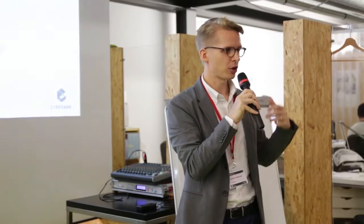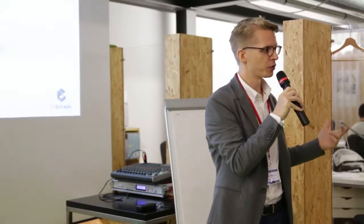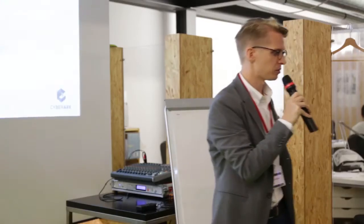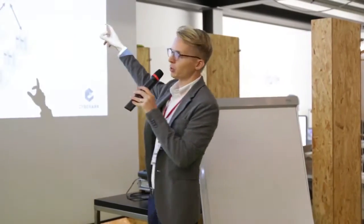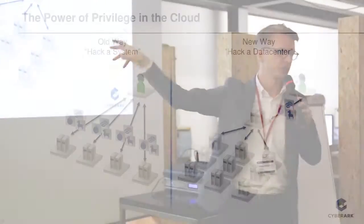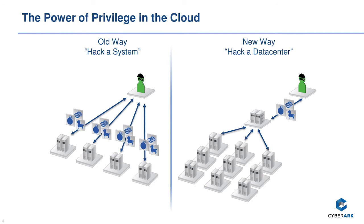We want to protect things like your access to consoles — into OpenStack, into your cloud providers, into your virtual infrastructure. These have great power: you can bring up and take down an entire infrastructure. We're seeing a concentration of privilege, whether that's for a human operator moving things to the cloud, or for automation tools like Jenkins, Ansible, and Puppet. If you can attack those, you can compromise everything underneath.